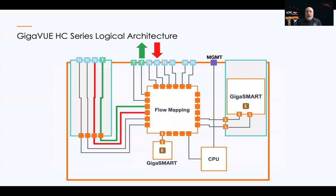If you look at the actual hardware appliance itself — the HC series logical architecture — internally there's a flow mapping function, some hardware that does that job. It takes traffic in from one origination point and sends it out to a destination. Hanging off that is the GigaSmart function itself. A GigaSmart could be built in, could be something that inserts in the rear, or it could be something that inserts in the front, depending on the model of HC series you have. It's all controlled from a CPU running the GigaVUE OS. A GigaSmart module is what really contains the GigaSmart functionality and the software — or firmware — running on it.